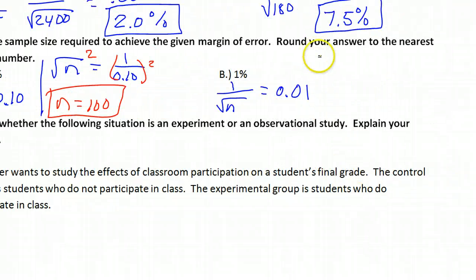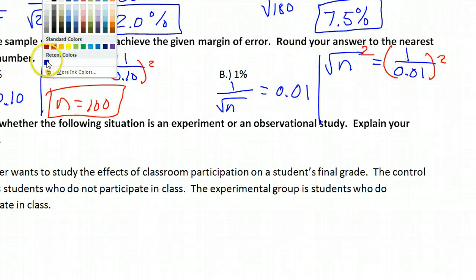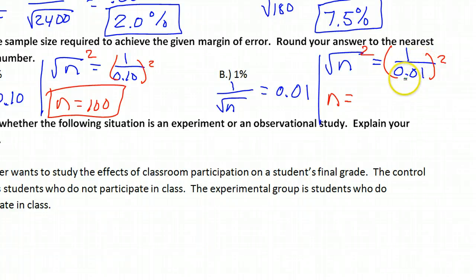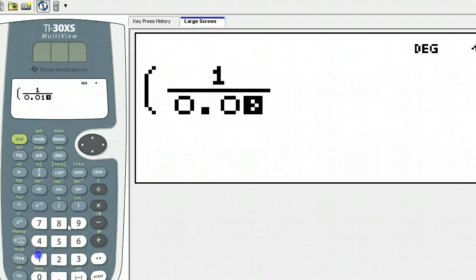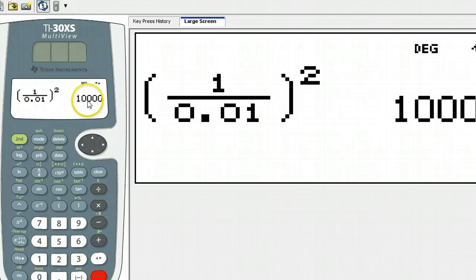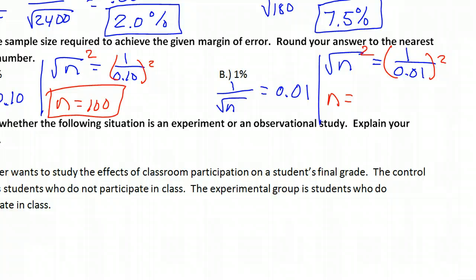Doing the reciprocal of both of these gives me square root of n equals 1 over 0.01. Squaring both sides is going to give me n equal to 1 over 0.01 squared, which is 10,000. I said too little when I was guessing before. We'd need a sample size of 10,000 to get down to a 1 percent margin of error.